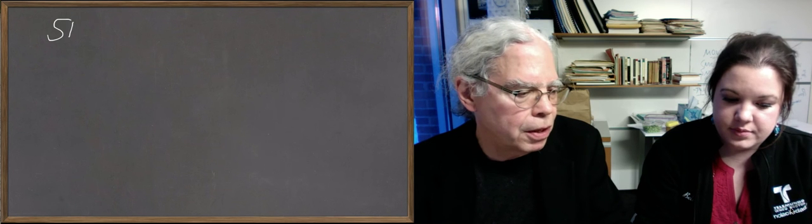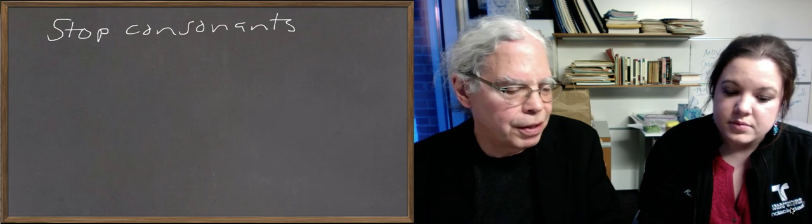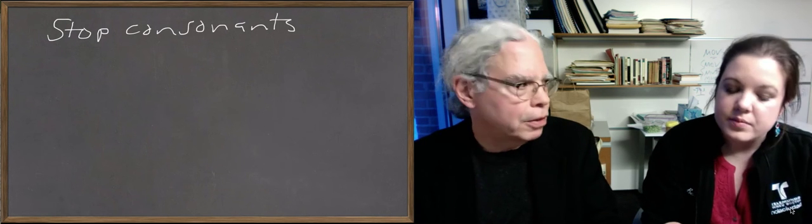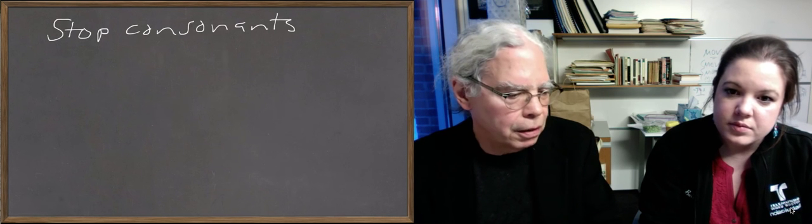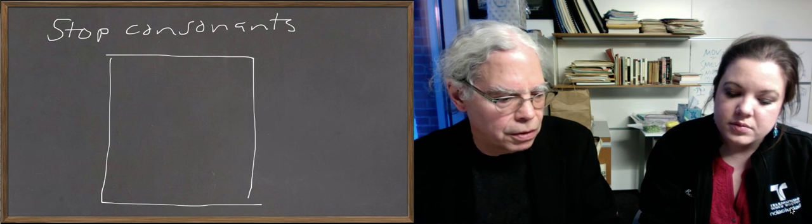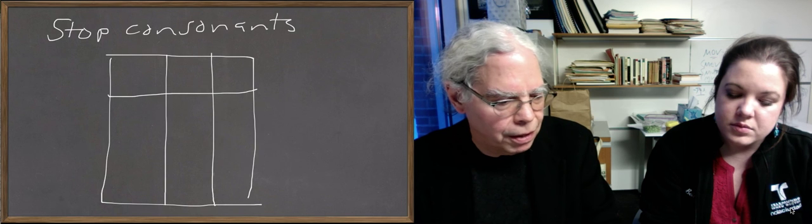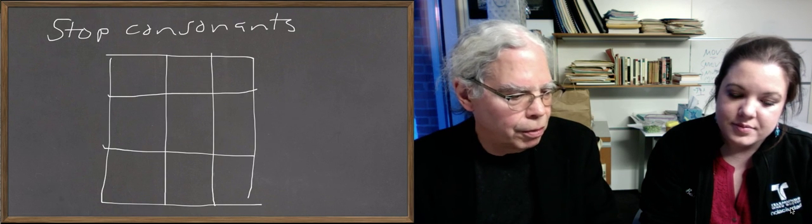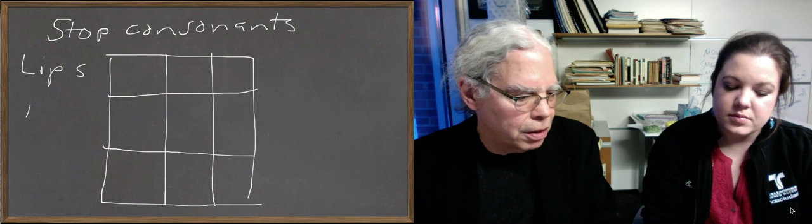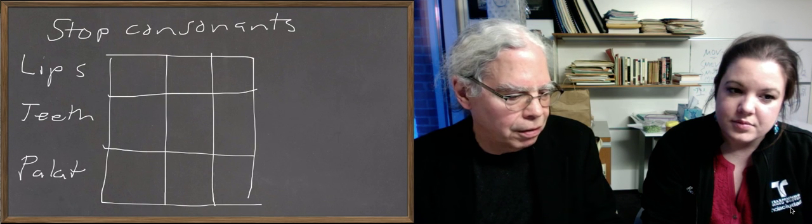This is about what are called the stop consonants in Greek. I'm not going to give you the anatomy of making consonants in a language, but these are consonants that are made by stopping the flow of air in your vocal apparatus. It's a beautifully arranged symmetrical system in Greek, these consonants. And here's the way they work.